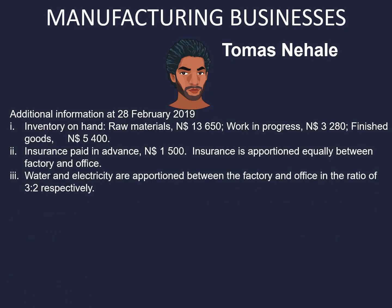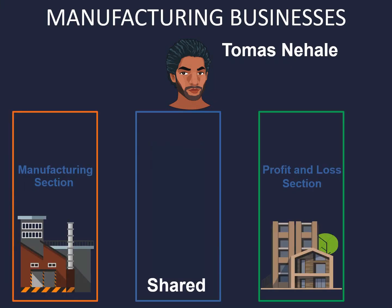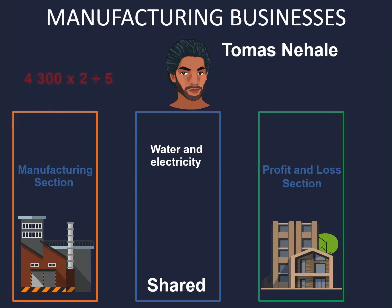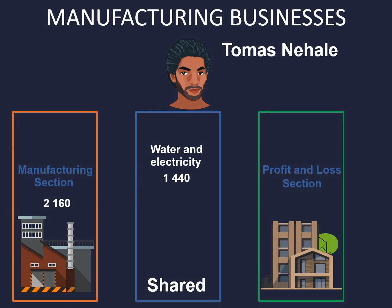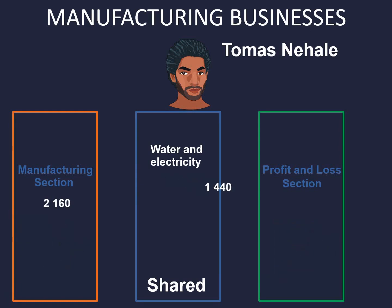Our third point shows water and electricity are apportioned between the factory and the office in the ratio of three to two respectively. When working with ratios we need to add up the two numbers to get the denominator, so the denominator will be 5. For the manufacturing section: 4,300 times 3 divided by 5 gives us 2,160. For the profit and loss section: 4,300 times 2 divided by 5 gives us 1,440. So 2,160 goes to the manufacturing section and 1,440 goes to the profit and loss section.